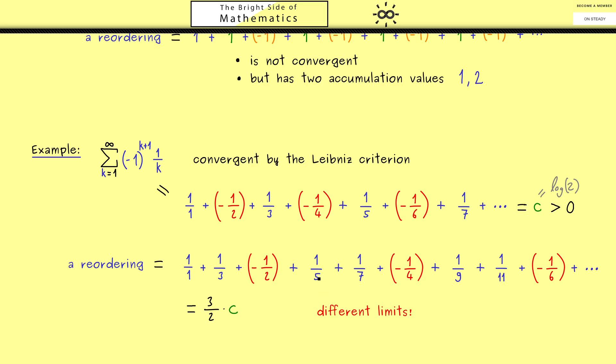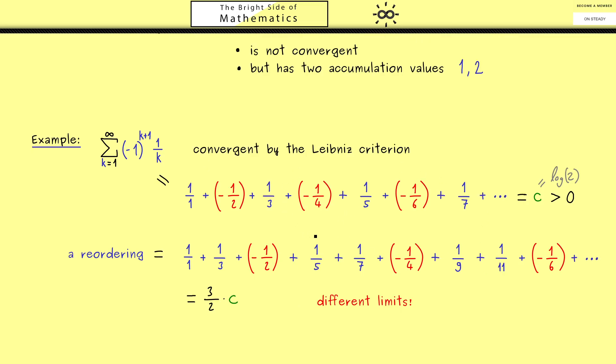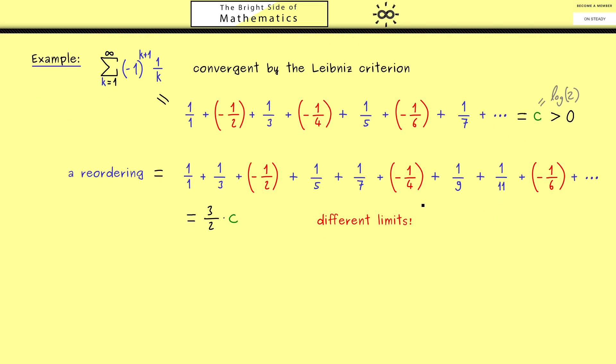The important result is we have a convergent series, we reorder it and get another limit out. The calculation is a nice exercise but I don't discuss it now. I want to focus on the result that this strange thing cannot happen for an absolutely convergent series. For such a series it's always allowed to reorder without changing the limit.